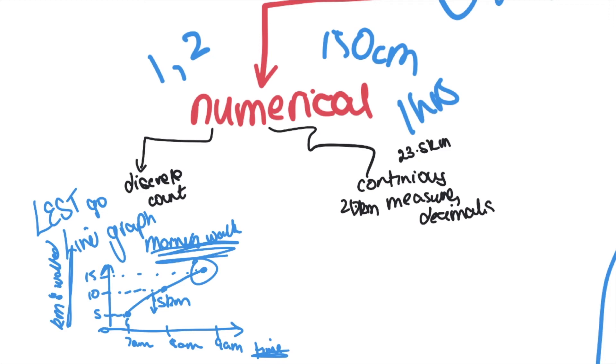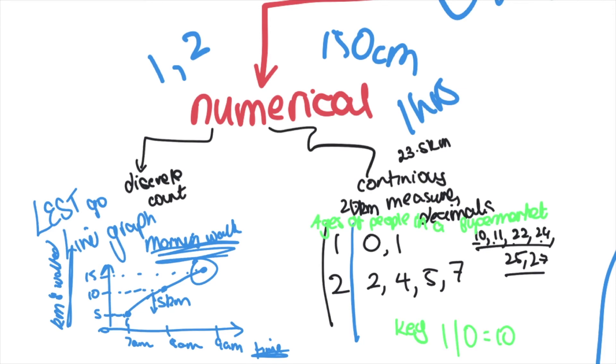The second type of graph that we looked at with numerical data is called a stem and leaf plot. A stem and leaf plot contains numbers in the stem - here's the stem. The first half of the number is in the stem and the second half is in the leaves, in order. This is how those pieces of data here would look in a stem and leaf plot. You need a title, so maybe this was the ages of people outside the supermarket. And you need a key so people know that if they read one in the stem and a zero in the leaf, that equals 10.